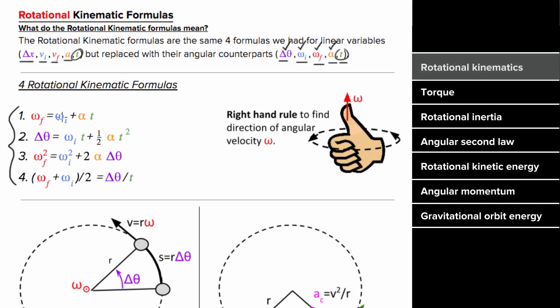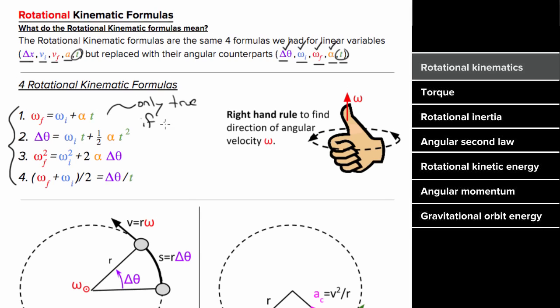You only get the first two of these on the AP exam formula sheet — you do not get equations three and four. And just like the regular kinematic formulas, these rotational kinematic formulas are only true if the angular acceleration is constant.